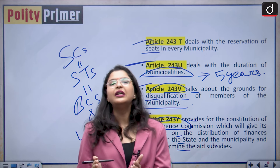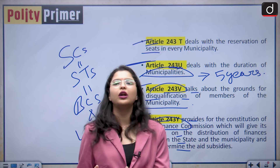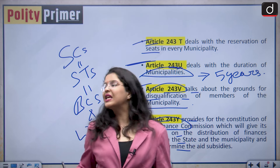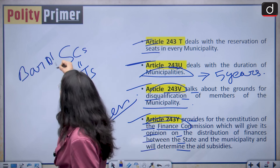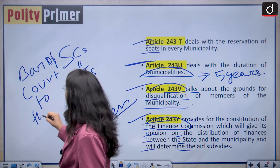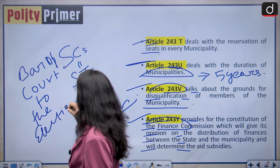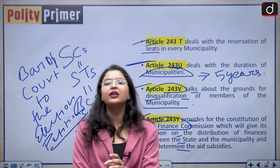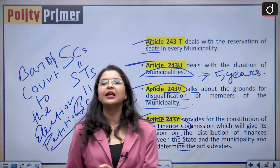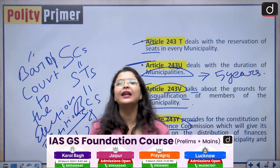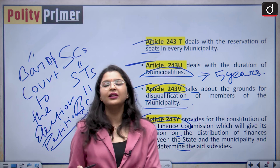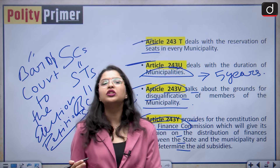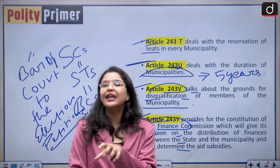So it talks about not only the constitution of the state election commission but also the constitution of the state finance commission, so that finances can be divided between the state government and the local self-institutions accordingly. Both the 74th and 73rd constitutional amendments also say that there is a bar on courts hearing election petitions. The courts in India cannot directly hear a challenge to elections to Panchayats and municipalities until you first present a petition regarding the elections to the state election commission.